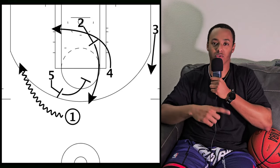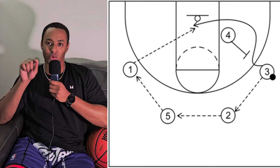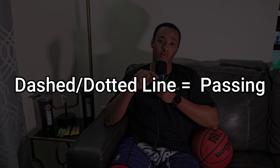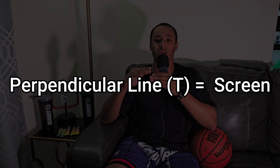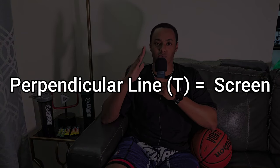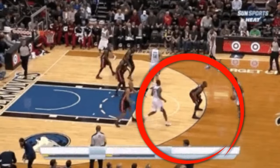If you see a dotted or dashed line, that is usually a pass from one player to another. If you see a line that's interrupted by a perpendicular line — where the line looks like a T, cutting short with a line straight through the middle — that is usually indicative of a screen. A screen is when a player comes up and acts as a block to the defensive player, giving the primary ball handler space without defense on them.